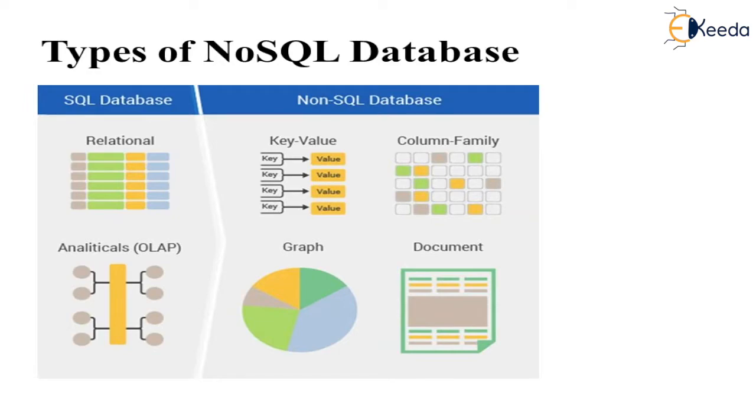The types of NoSQL databases — basically divided into four categories: key-value, column family, graph, and document.